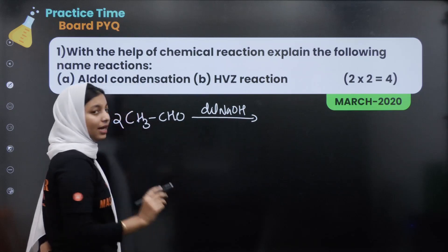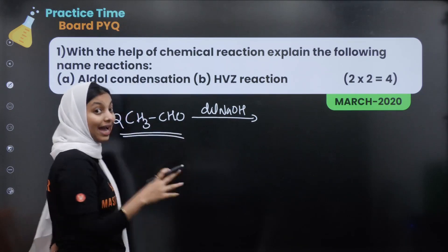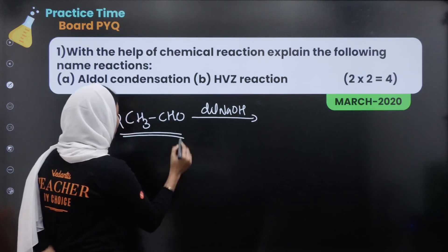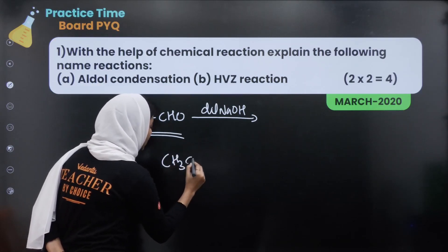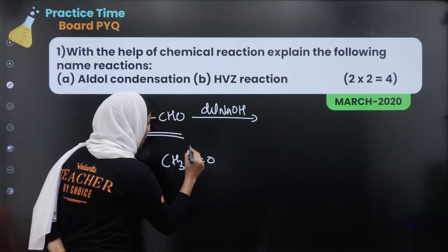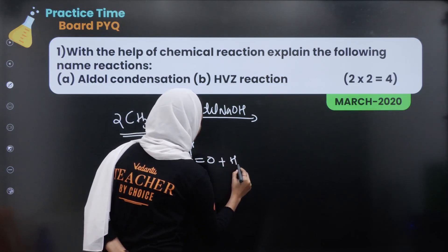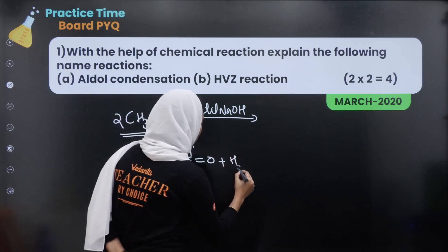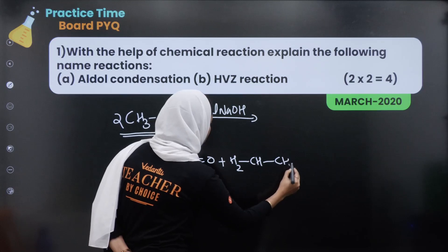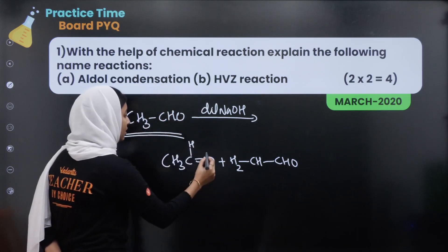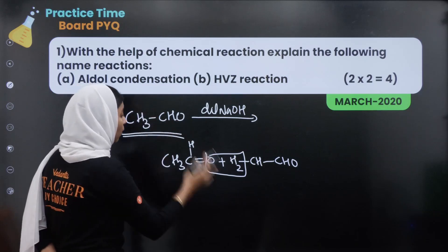CH3CHO. Here we are going to take a look at how to use the aldol condensation product directly. CH3C=O plus H2C-CHO. Here we are going to take a water molecule.